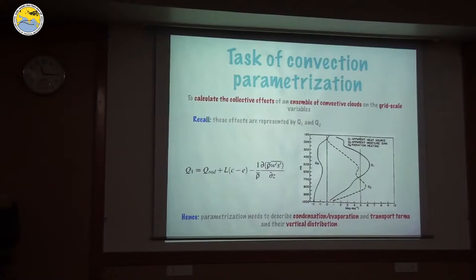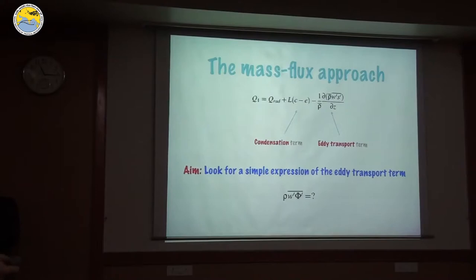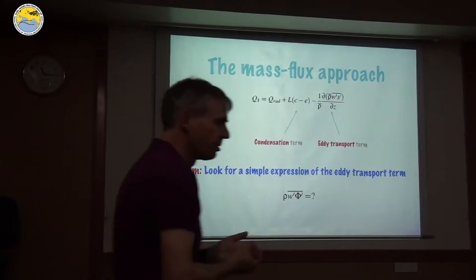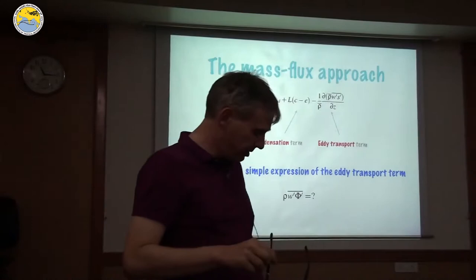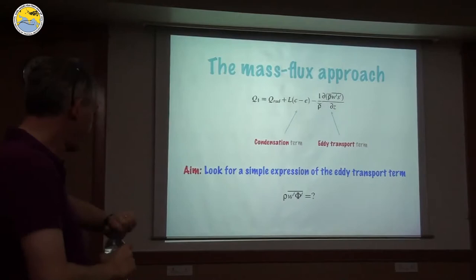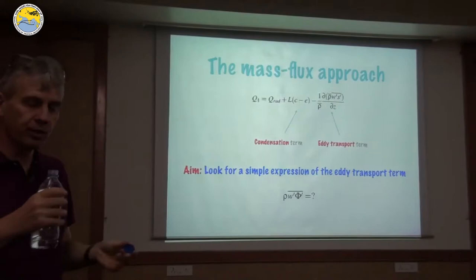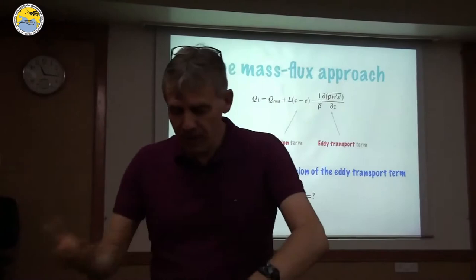The most common approach today in pretty much every climate model and many regional models uses an approach called the mass flux approach. There are two terms we have to describe. The mass flux approach is about dealing with the sub-grid scale transport term — we're looking for a simple expression for this term. We'll spend probably 20 minutes or more on this because it's quite crucial and you can't find it in a single textbook. So how does this mass flux approach work? The goal of the next 15 minutes or so is to find a simple expression for this flux term, which we can then plug into the equation for convection.